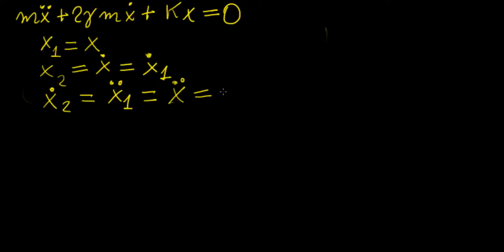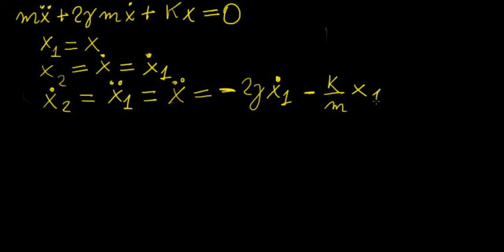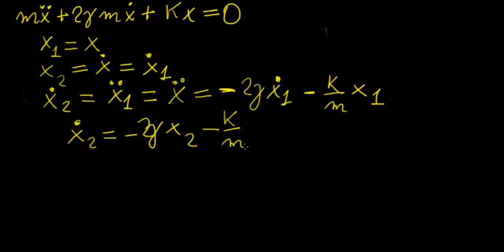In this case, what we're going to end up having is minus 2 gamma x dot, which is x1 dot. And then we're going to have minus k over m times x, which is equal to x1. So more generally, x2 dot equals minus 2 gamma x2, because x2 equals x1 dot, minus k over m times x1.